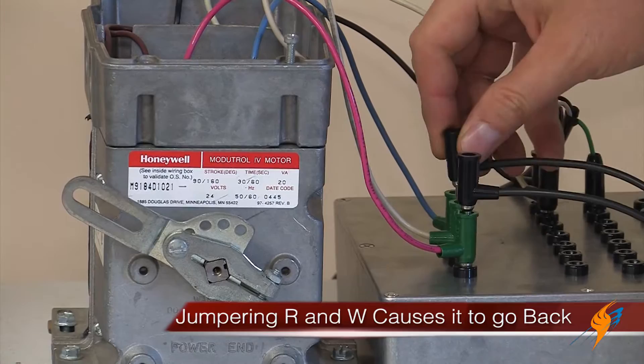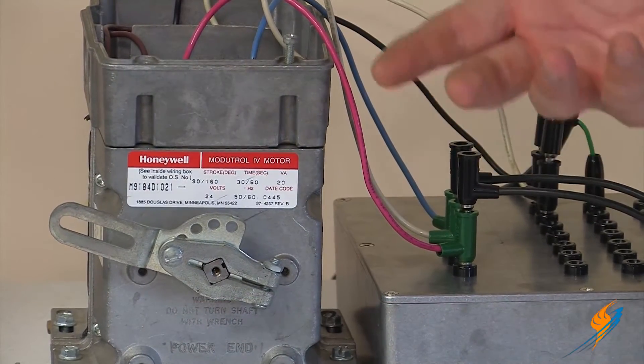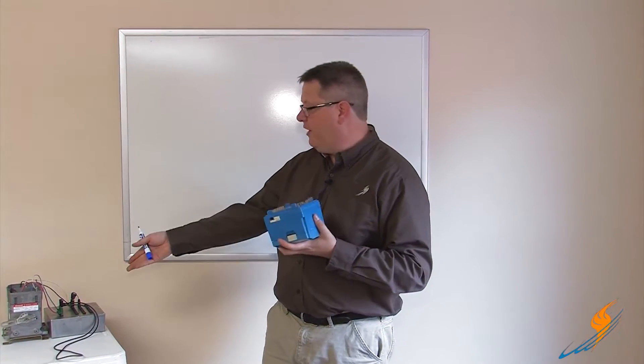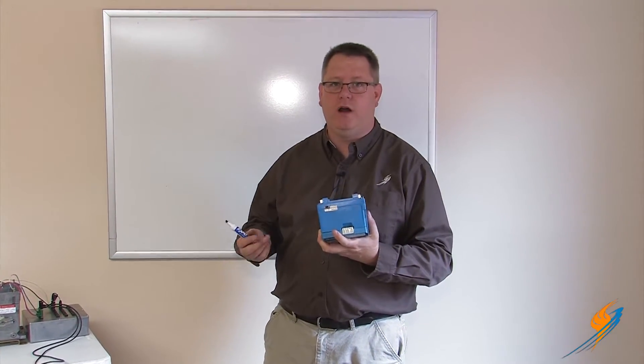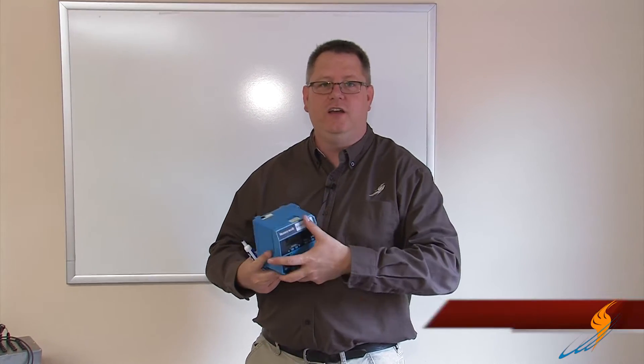Jumpering the R to the W terminal will drive the motor back to the low fire or start position. It's easy for me to jumper that physically with a jumper wire, but how does the flame safeguard send that same information? It uses terminals and relays to jumper it internally.